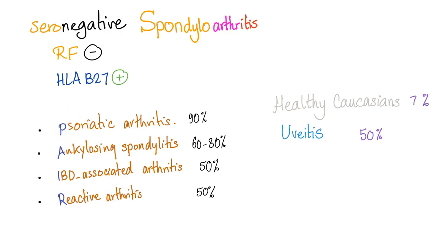The mnemonic is PEAR. Don't forget that healthy Caucasians — about 7% of them — have HLA-B27 and are perfectly fine. Also, uveitis 50% of the time can have HLA-B27 positivity.